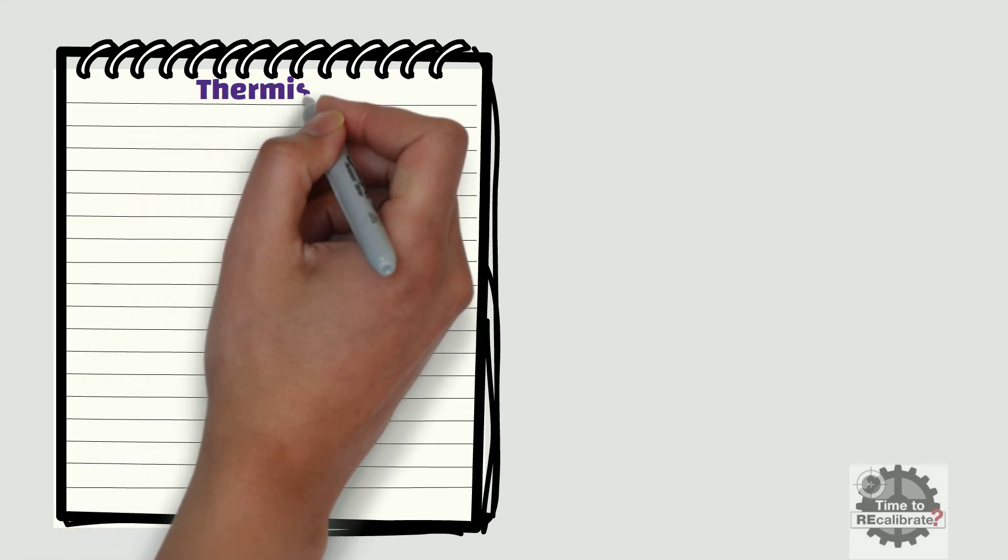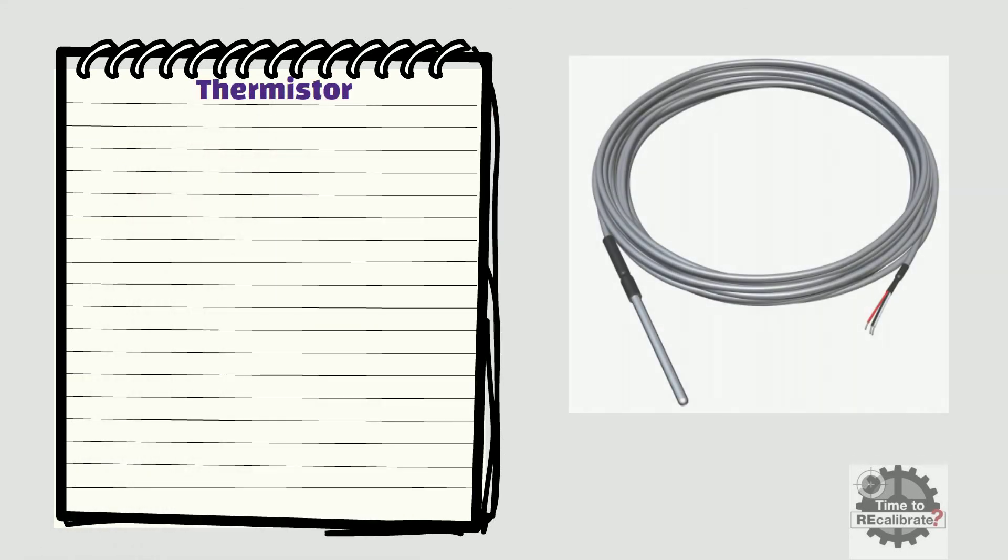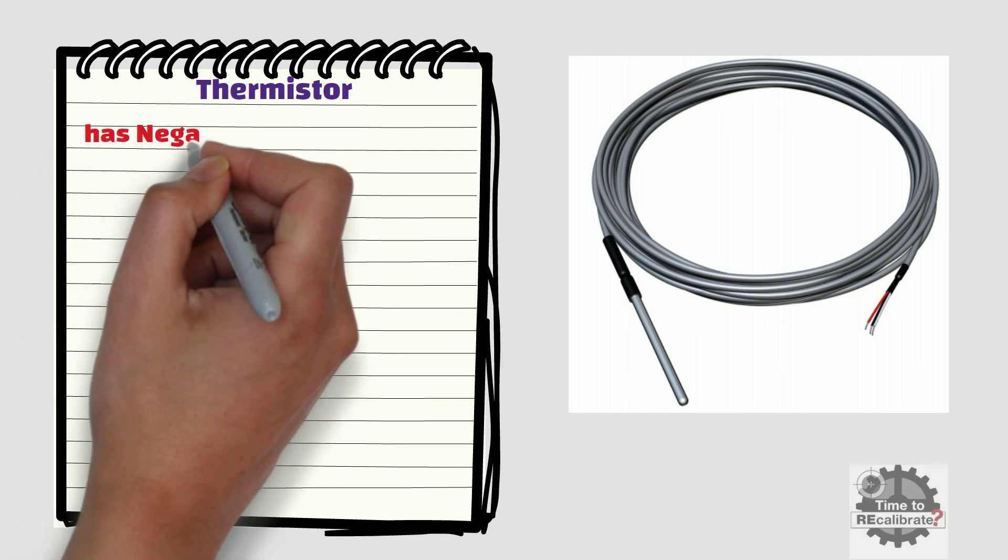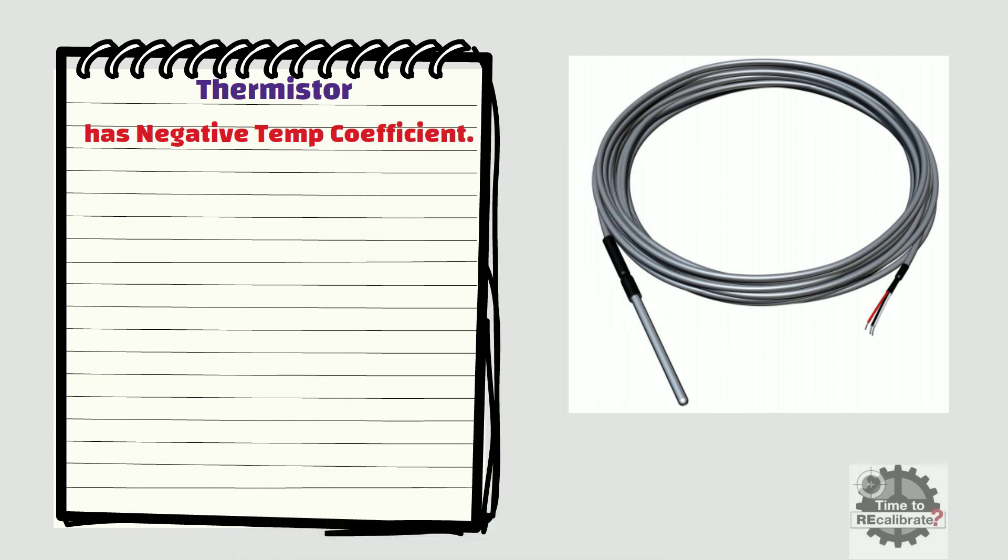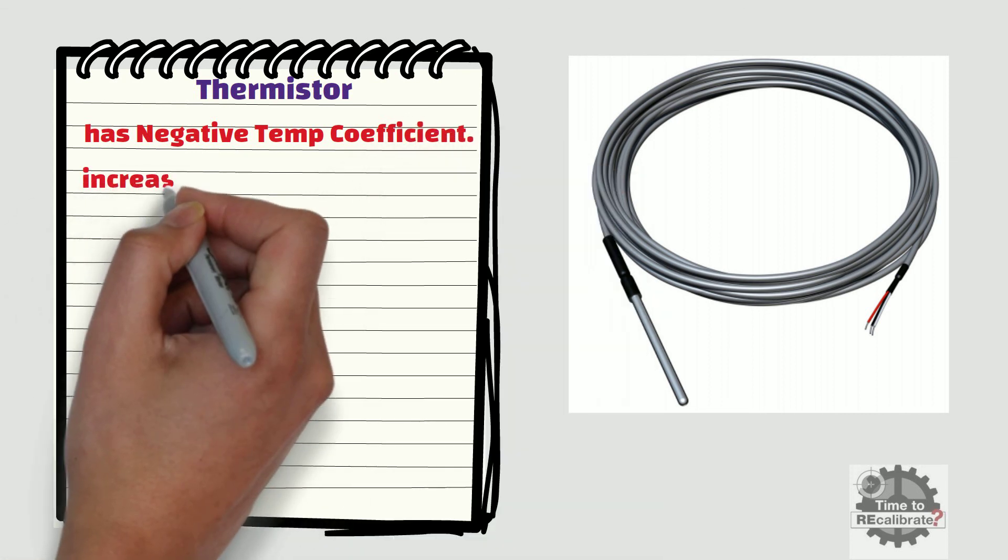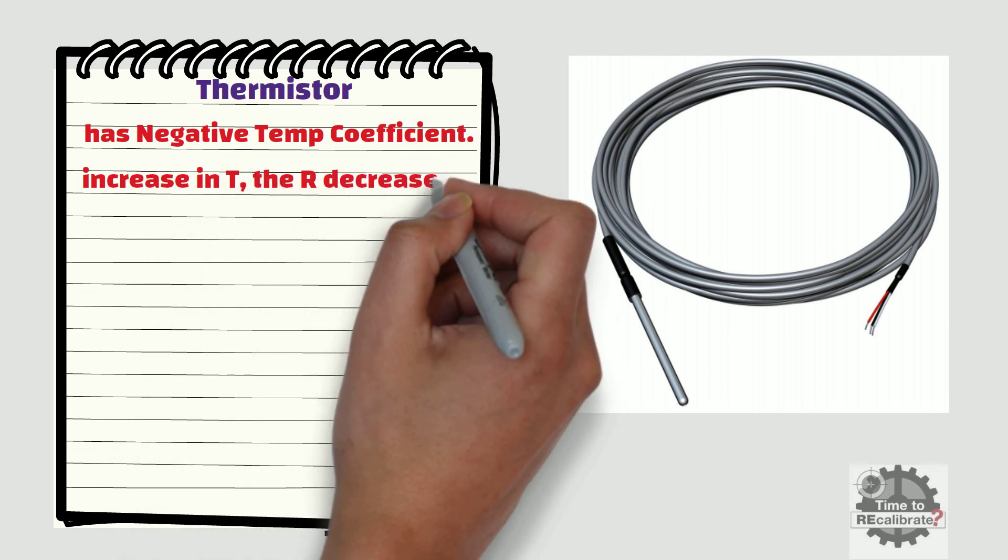Another resistance-based temperature sensor is the thermistor. Unlike the RTD, the typical thermistor has a negative temperature coefficient. This means that with an increase in temperature, the resistance of the thermistor decreases.